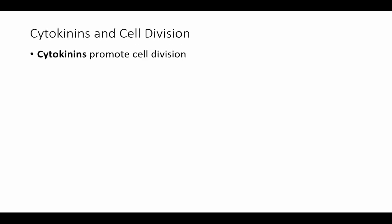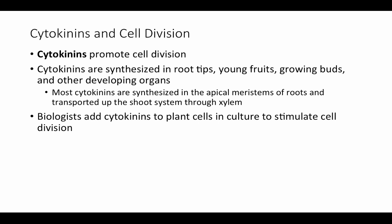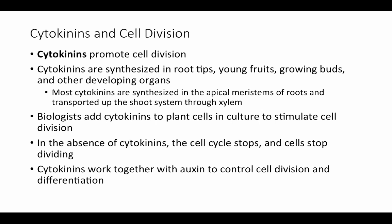Now let's look at cytokinins, another major category of plant hormones. Cytokinins are mostly associated with cell division — they promote cell division. Cytokinins are synthesized in root tips and also in young fruits, growing buds, and other developing organs. Most cytokinins are synthesized in the apical meristems of roots and then transported up the shoot system through the xylem. Biologists often add cytokinins to plant cells in culture to stimulate cell division. In the absence of cytokinins, the cell cycle stops and cells completely stop dividing, making them important regulators of the cell cycle.